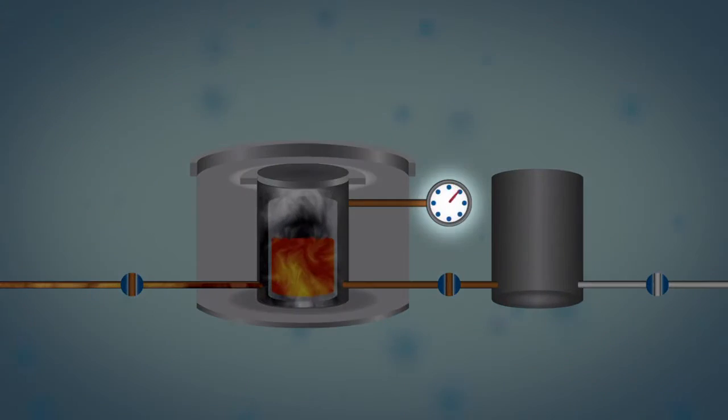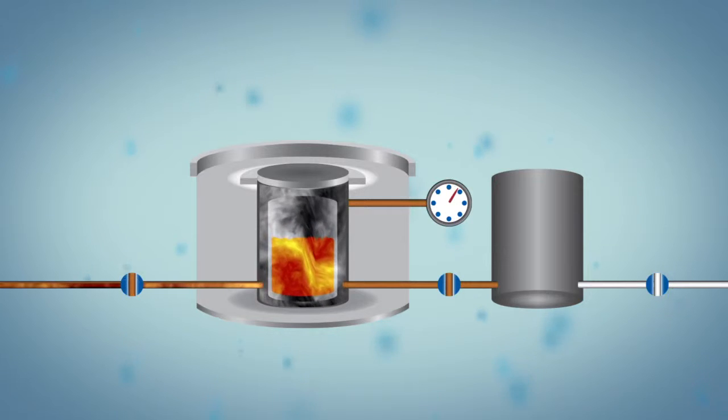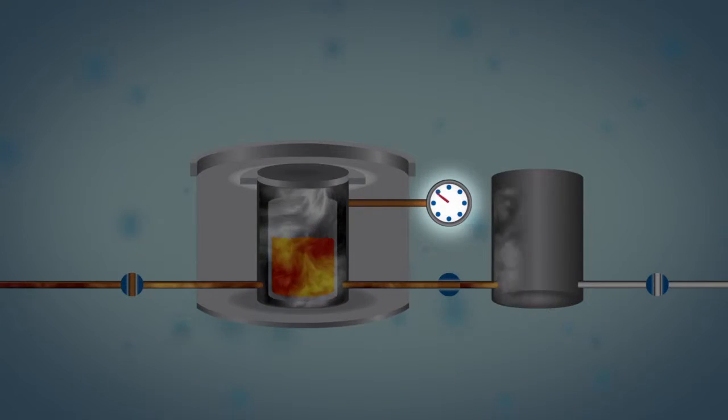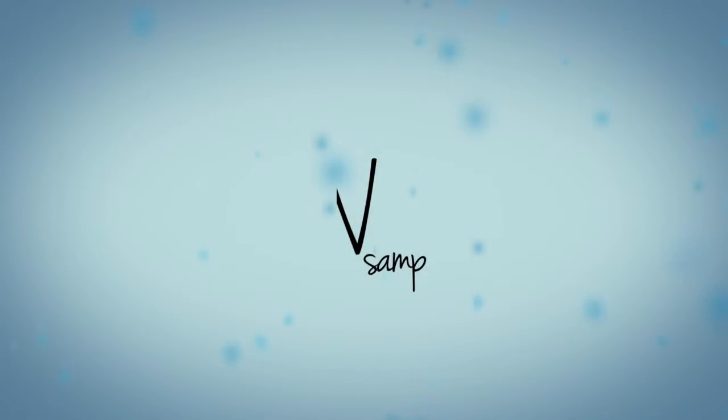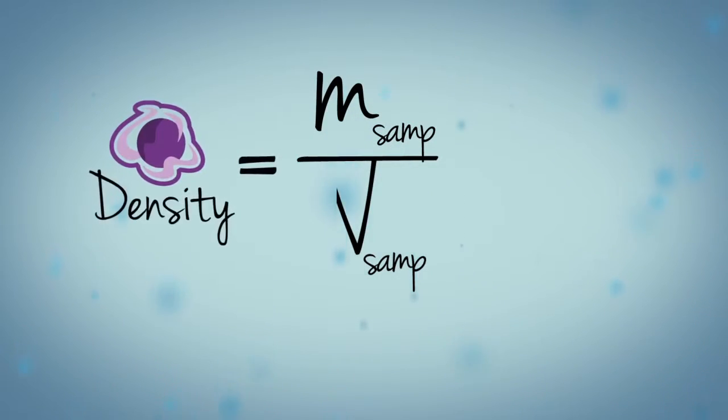Pressures observed upon filling the sample chamber and discharging the gas into a second empty expansion chamber produce a ribbon volume value. The AccuPyc divides this volume into the sample weight and automatically calculates the skeletal density.